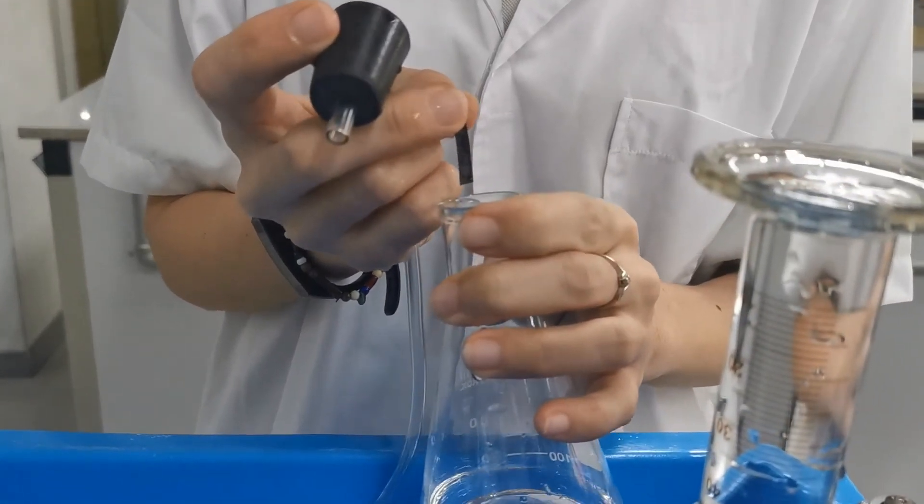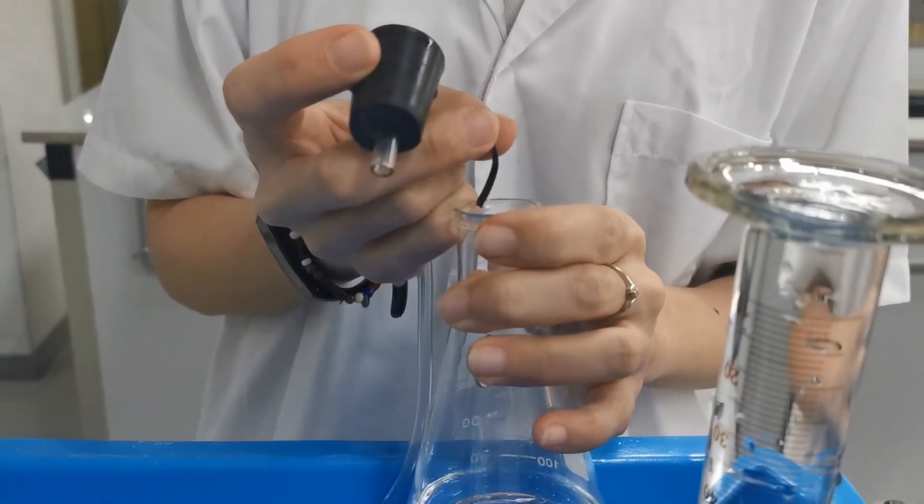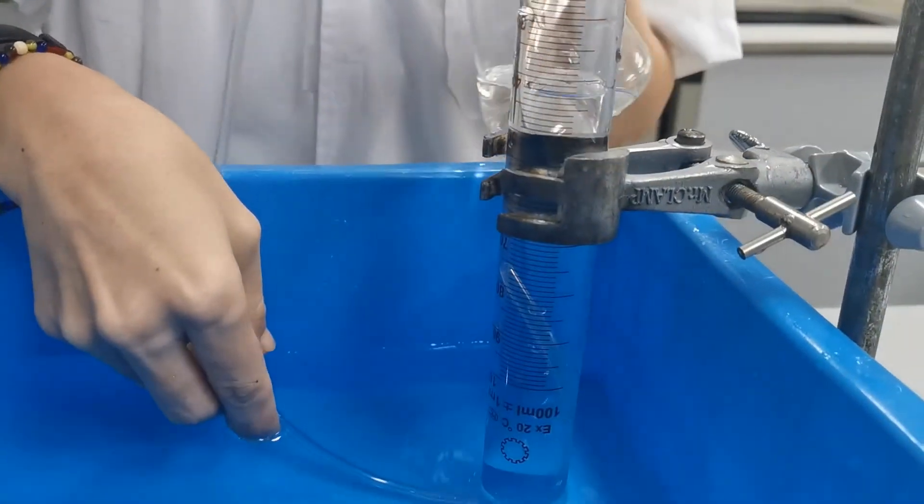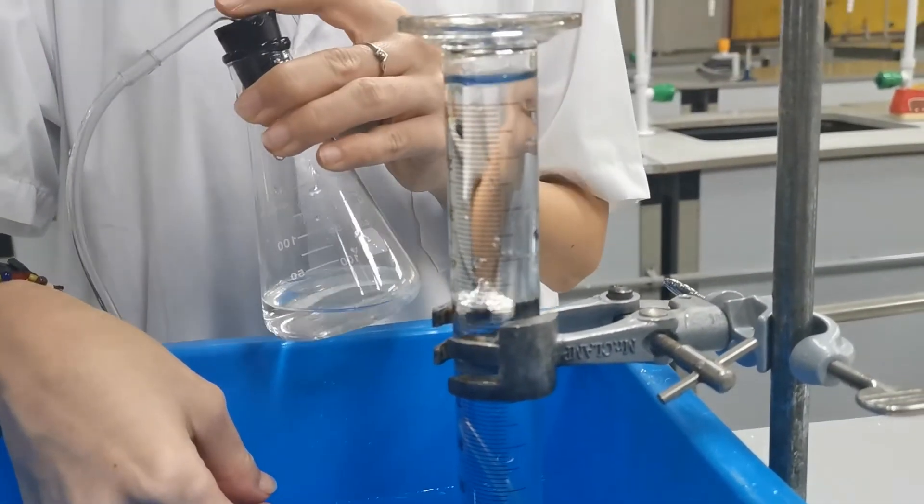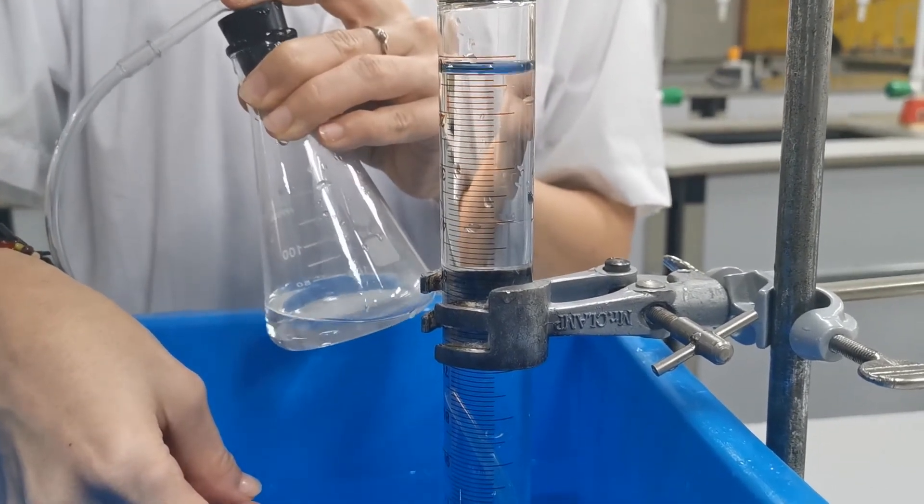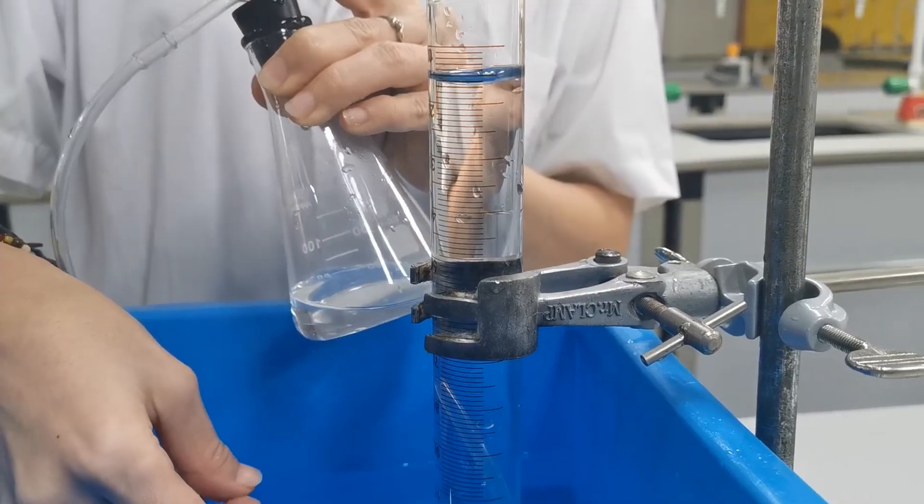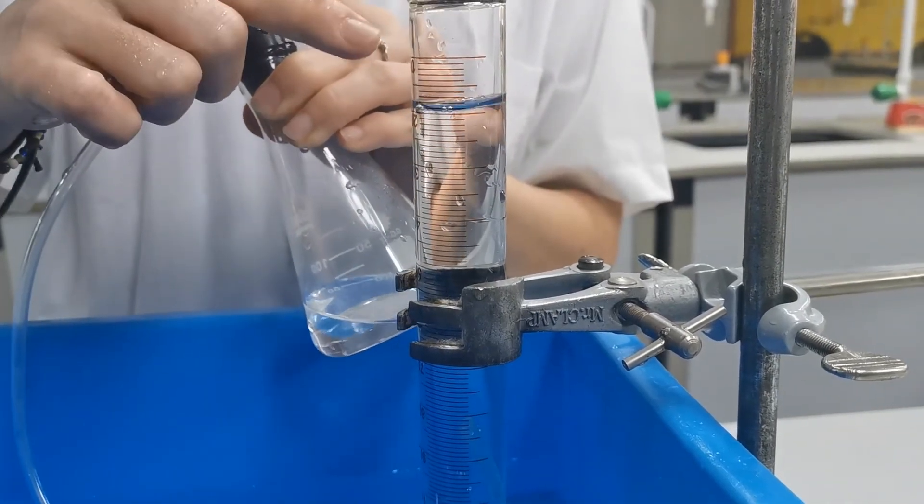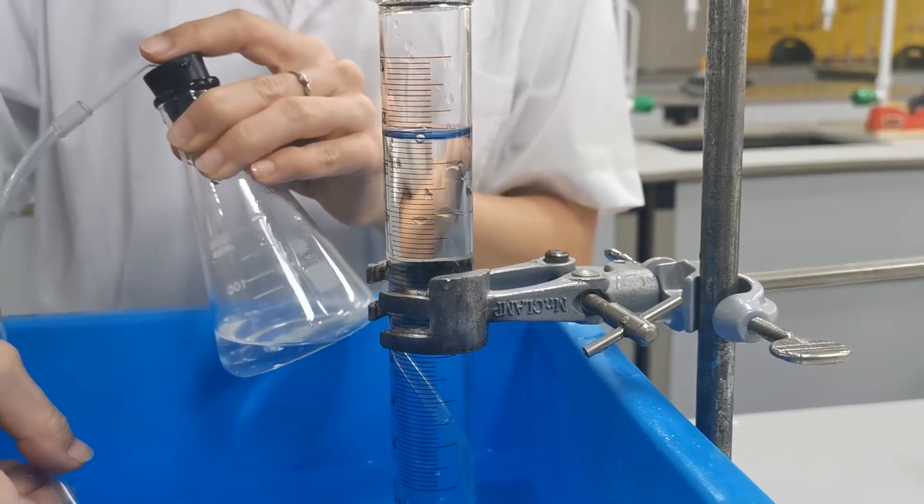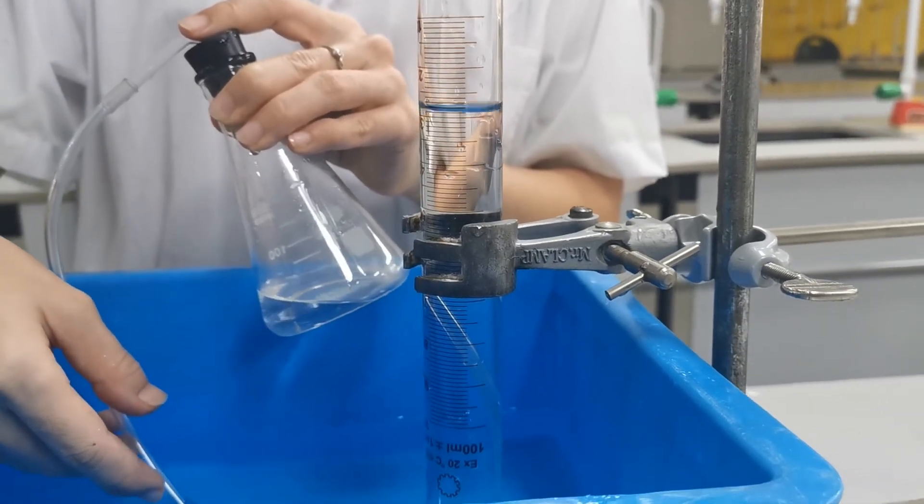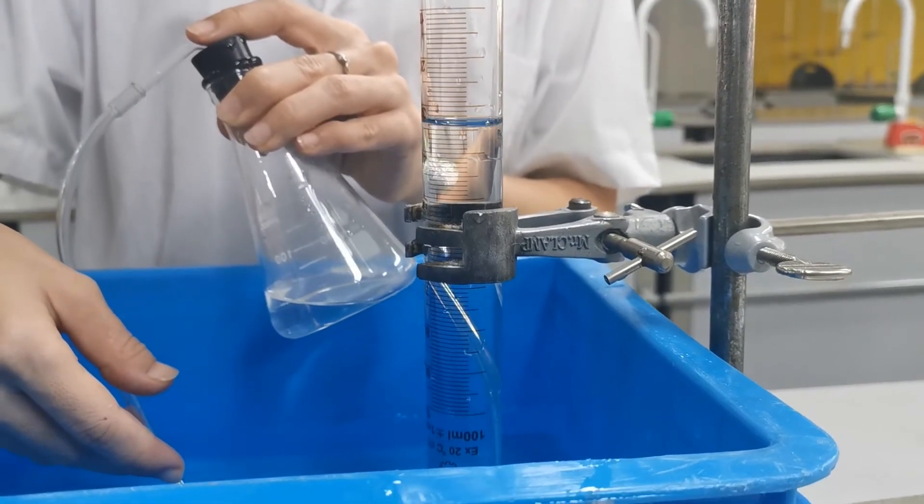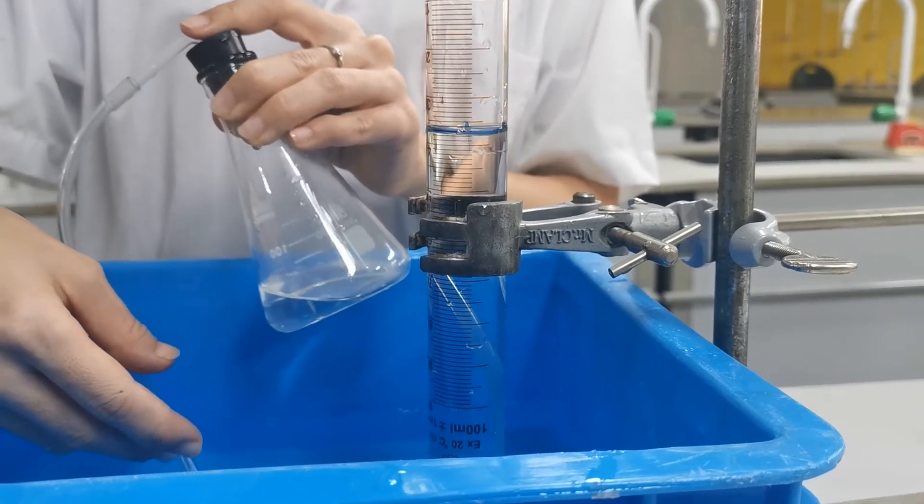As magnesium reacts with hydrochloric acid, you can see that bubbles are produced. Now you can see that at the top here, gas is collected. Because we're using a measuring cylinder, we can also read the volume of the gas collected.